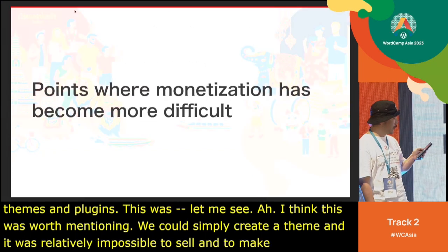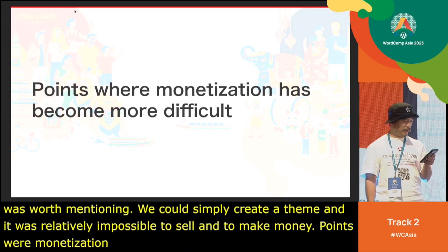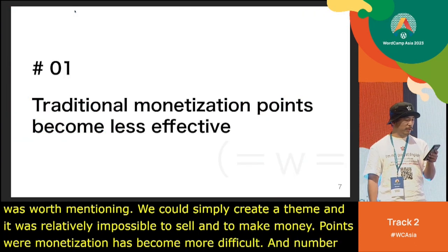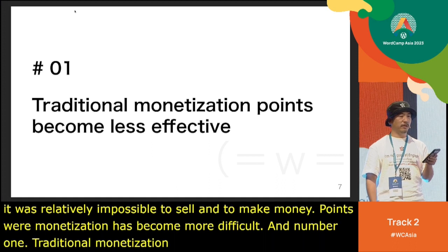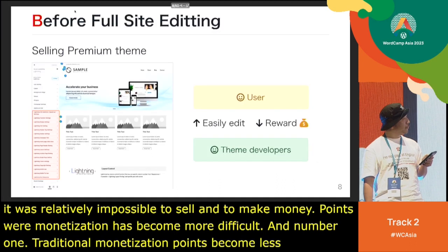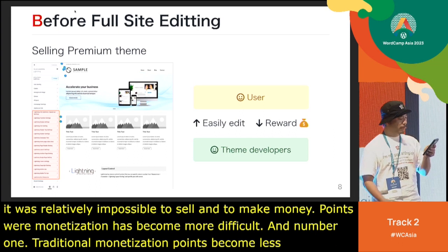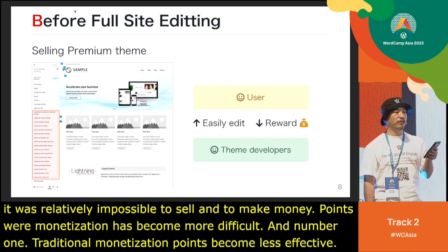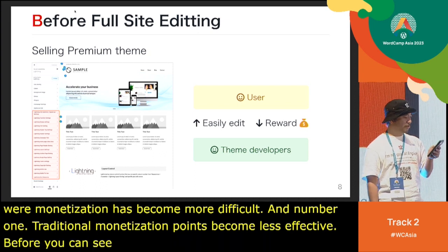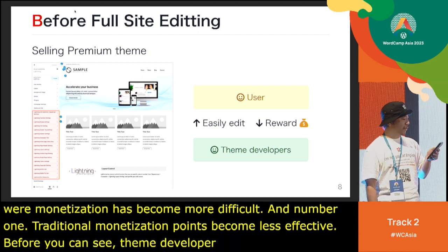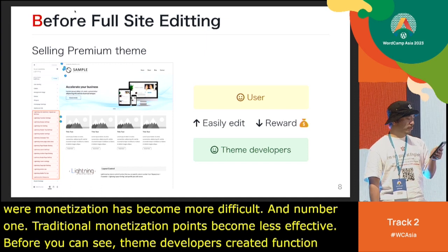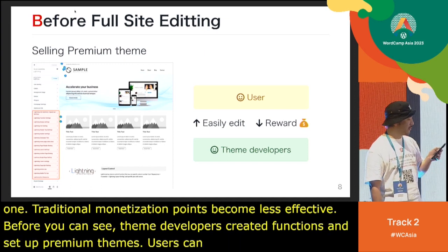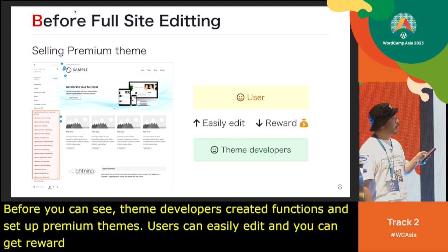Points where monetization has become more difficult. Number one: traditional monetization points have become less effective. Before FSE, theme developers developed themes with unique editing functions and sold premium themes. Users could easily edit, and theme creators could get rewarded. Such a relationship existed, and there was one monetization point here.